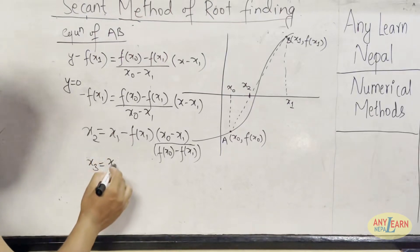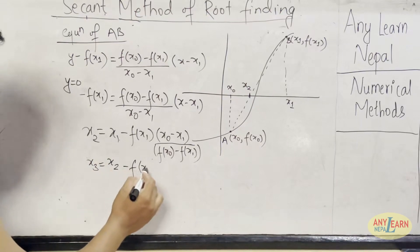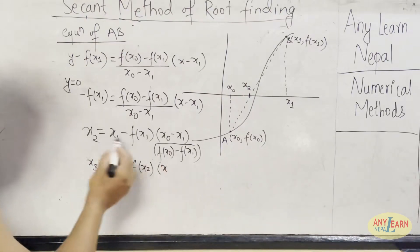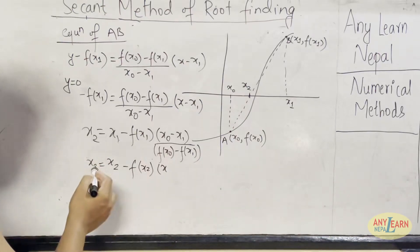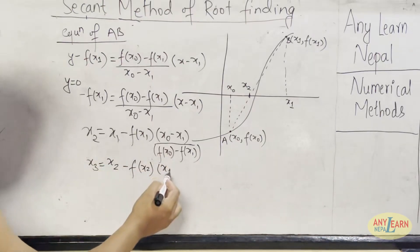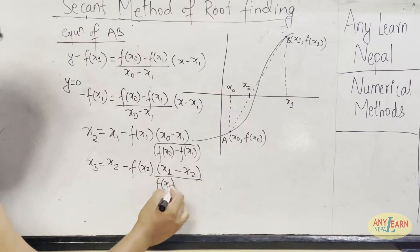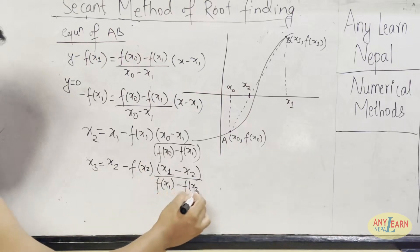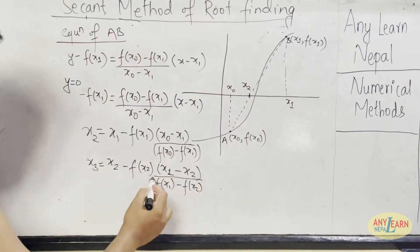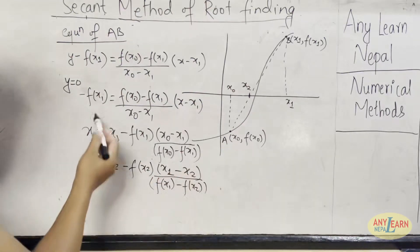So it becomes x2 minus f(x2) times (x1 minus x2) divided by (f(x1) minus f(x2)). So like this we can get the x3 value.